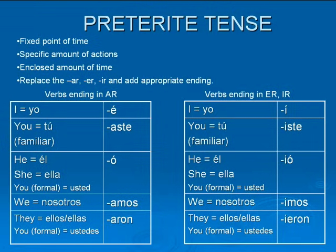Okay, the preterite tense. It's a fixed point in time, a specific amount of actions, an enclosed amount of time. So like the present tense, you remove the AR, ER, and IR, and you add the appropriate ending. For AR it's: -é, -aste, -ó, -amos, and -aron. And for ER and IR, it's: -í, -iste, -ió, -imos, and -ieron.